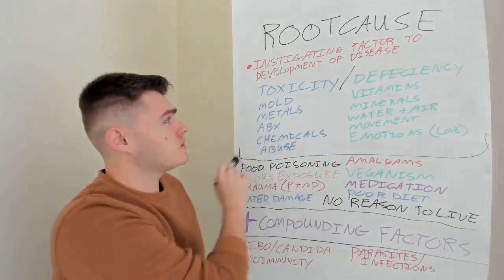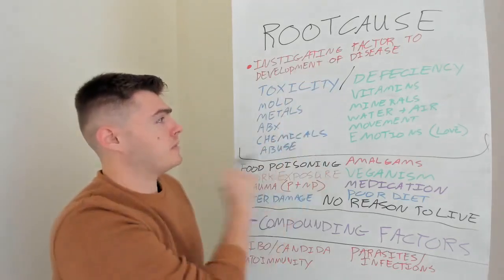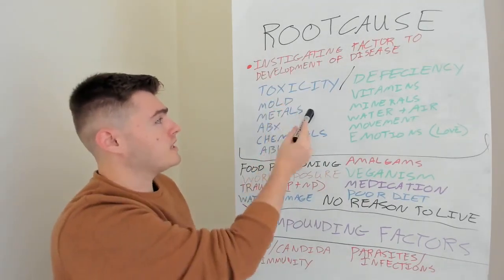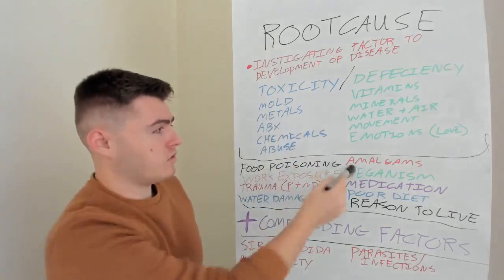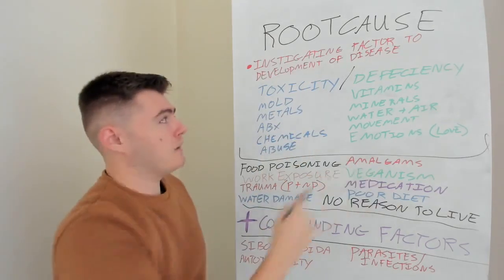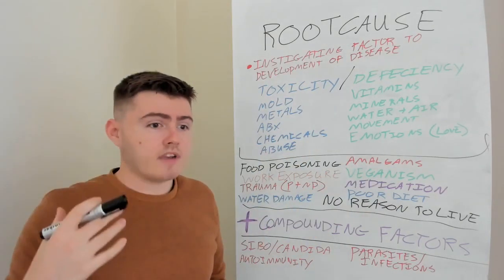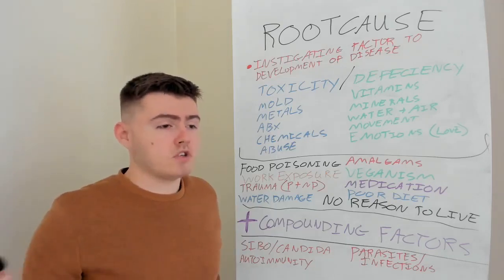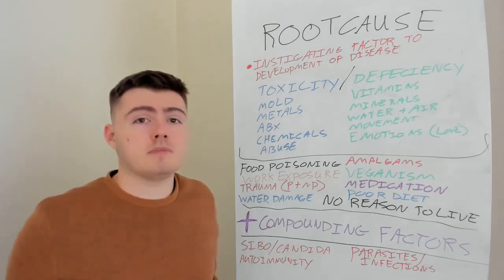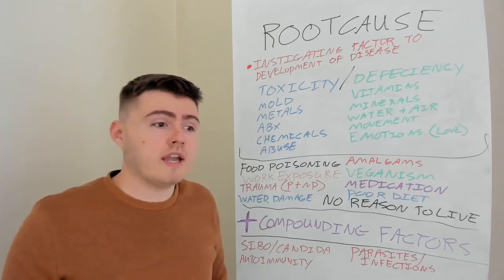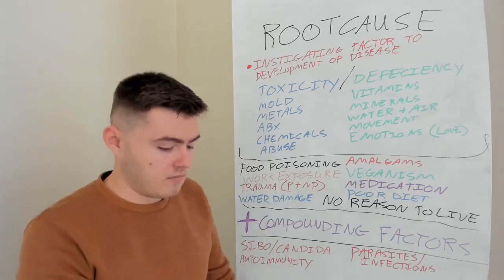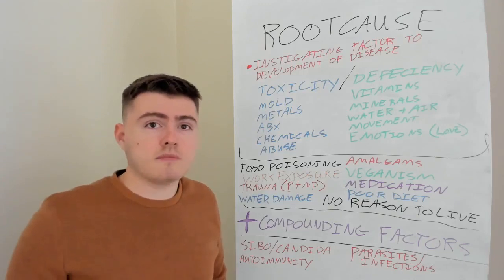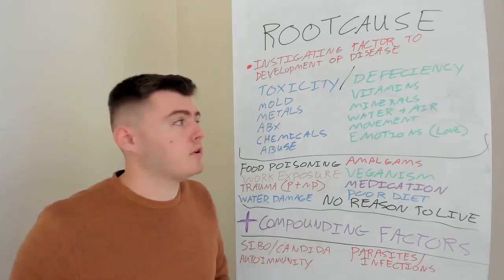These are the most common sources of toxicity that cause a chronic health problem. First, mold and mycotoxins. Second, metals — this can include amalgam fillings in your mouth, exposures to metals in food, or if you've got a joint replacement or bolts and screws. These can be leaching metals into your body.